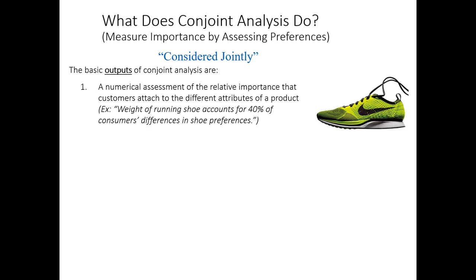For example, if we were doing a conjoint study about trying to optimally design a pair of running shoes, we might find that there's a certain type of customer for whom the weight of the running shoe accounts for 40% of the differences in their preferences. This would indicate to us that the weight of the running shoe is an important feature to take into mind when designing a new running shoe.